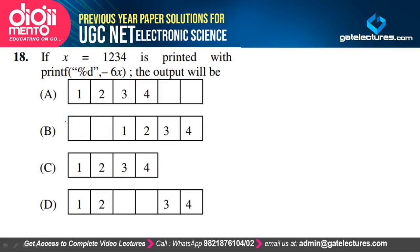If x = 1, 2, 3, 4 is printed with printf("%d", −6x), option A is the correct answer.